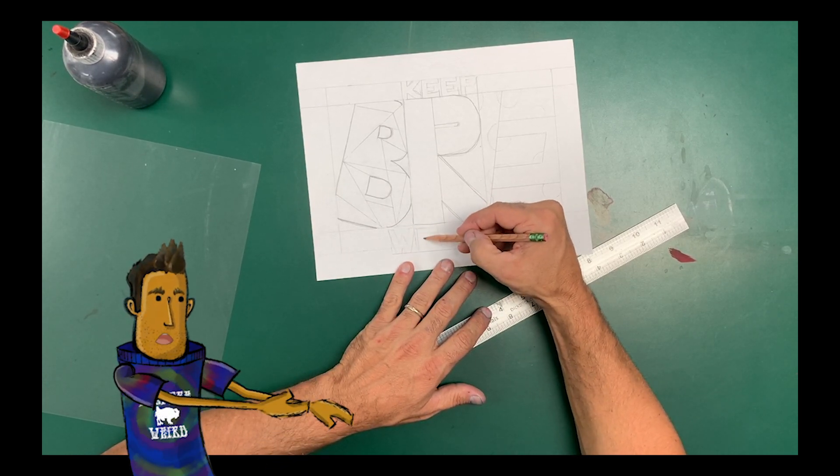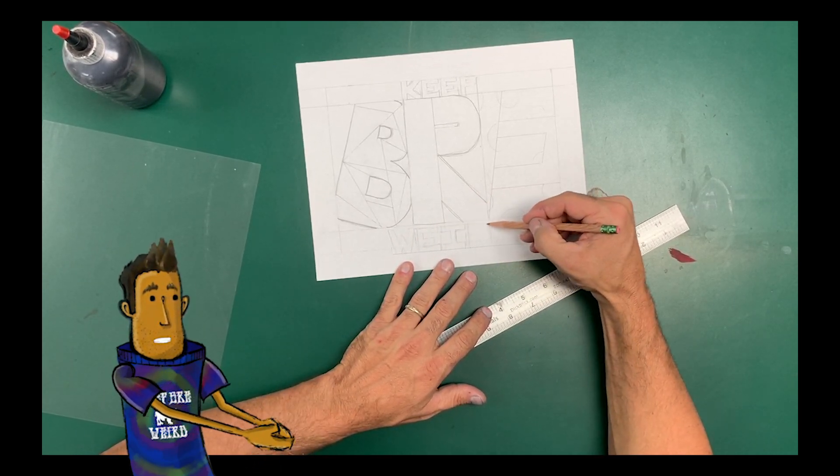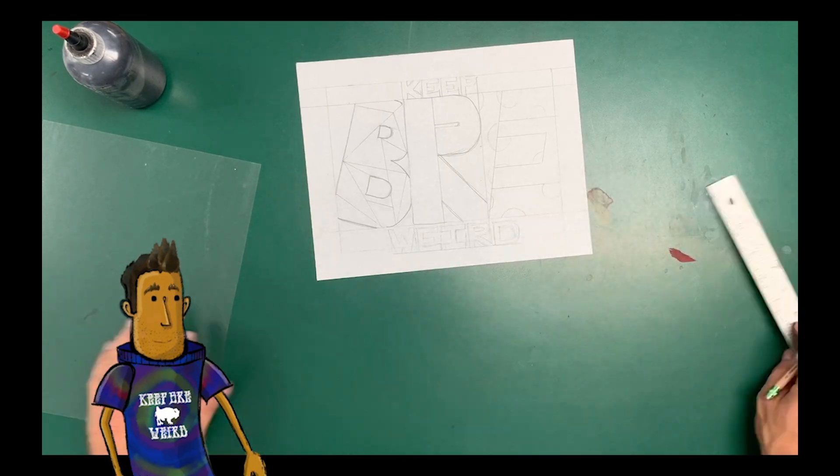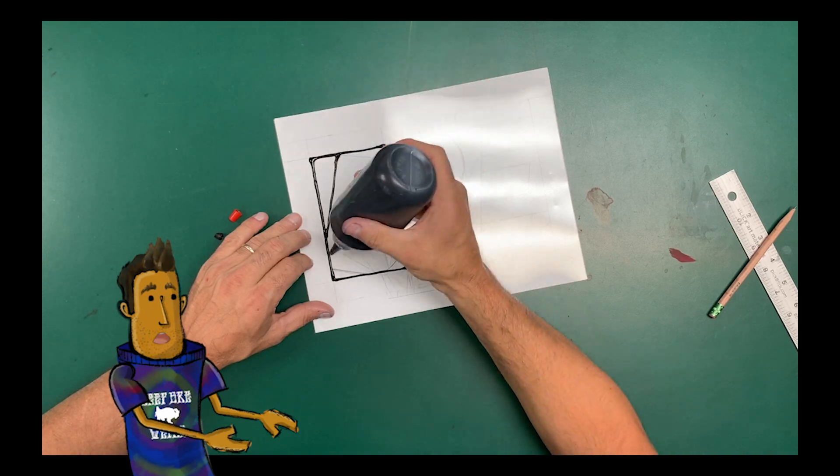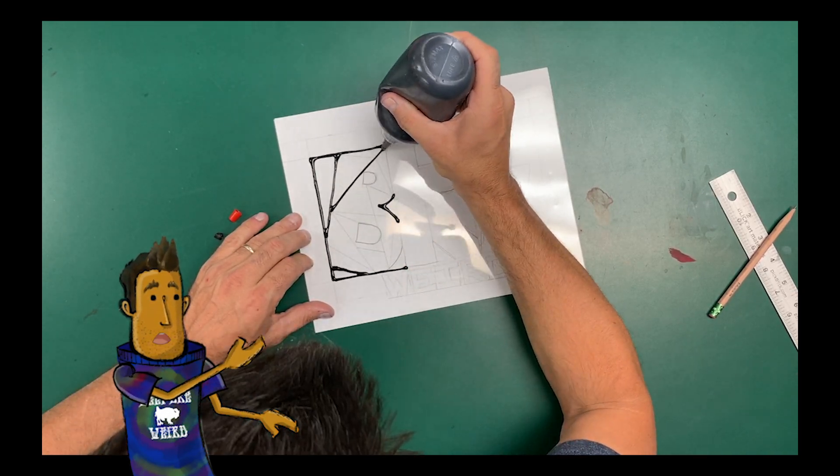You're going to trace around these things with black glue, so you can see that I took my drawing, and I covered it over with the transparency, the see-through transparency.